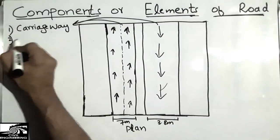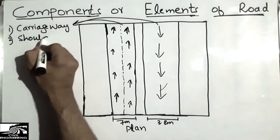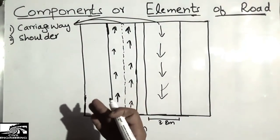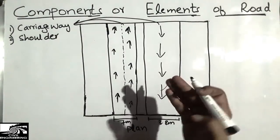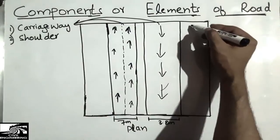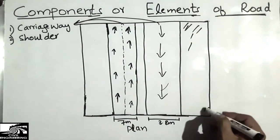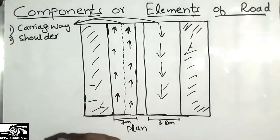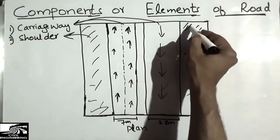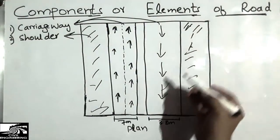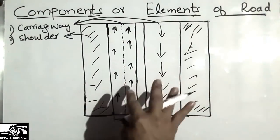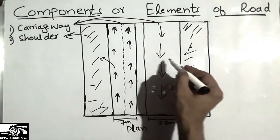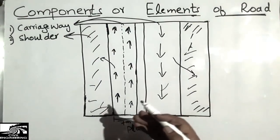The second component is the shoulder, sometimes also called the hard shoulder. The shoulder is the emergency part of the road where a vehicle can stop at any time. Shoulders are provided on the right side and the left side of the carriageway. They are provided just for emergency cases — if a vehicle needs to stop, it can move onto the shoulder so that the main traffic can continue moving.